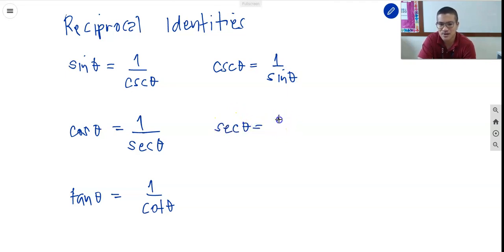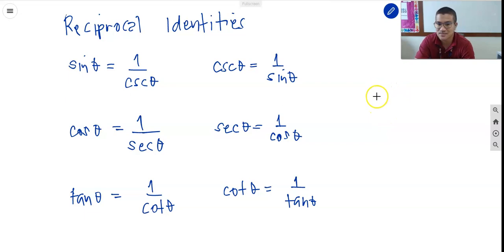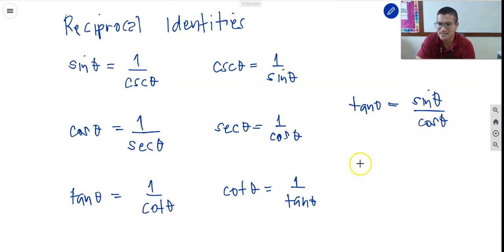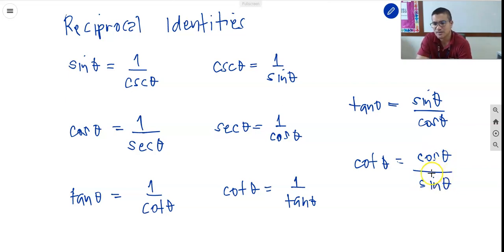Secant theta is equal to 1 over cosine theta, and cotangent is equal to 1 over tangent theta. One of the important identities to remember is the quotient identity, which gives us tangent theta equals sine theta over cosine theta. And then cotangent, which is the reciprocal of tangent, equals cosine theta over sine theta.